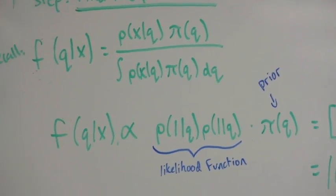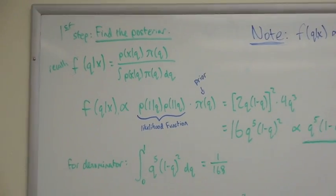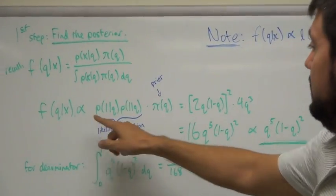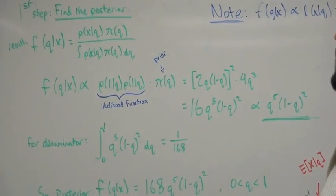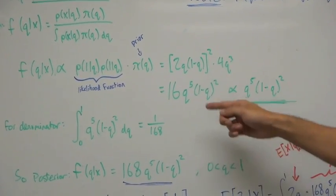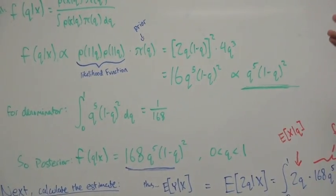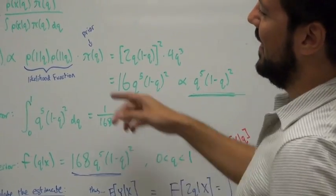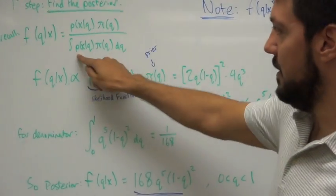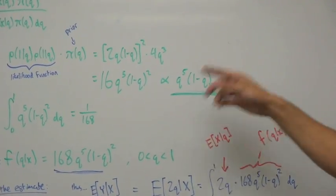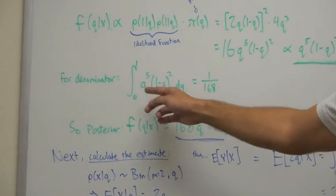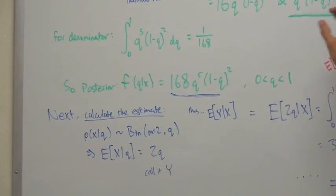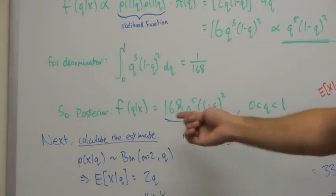Rather than brute-force calculation, a vital note is that the posterior distribution is proportional to the likelihood function multiplied by the prior distribution. When we compute this, it comes out to 16q⁵ times (1-q)², but we drop the constant 16 because of proportionality — that same 16 would appear in the denominator's integral and cancel out. So we leave it as q⁵(1-q)². For the denominator, taking the integral over the parameter space yields a numerical constant of 1/168. Plugging these back in gives us the posterior distribution.